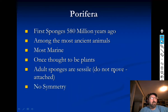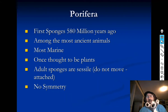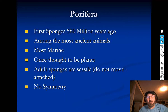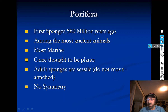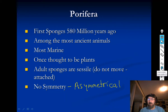Sponges really don't have any symmetry. If you look at a sponge, it's kind of all over the place — no symmetry. It's not bilateral, it's not radial. We consider sponges asymmetrical, meaning no symmetry. That's really important to understand.